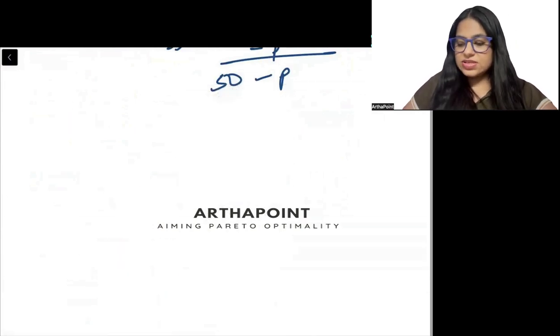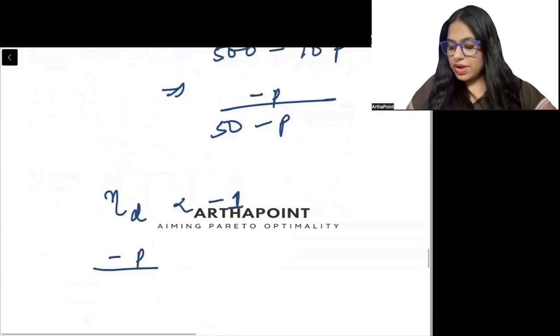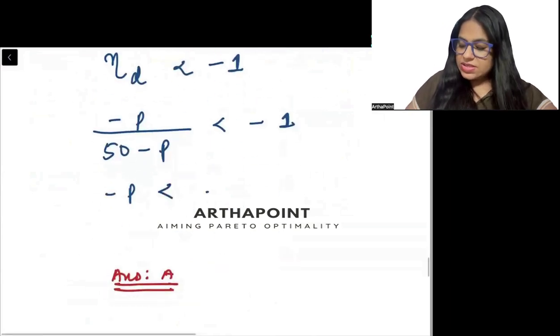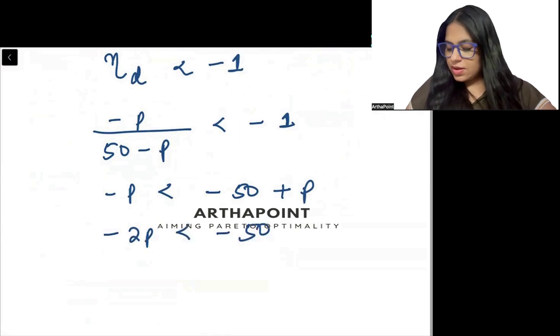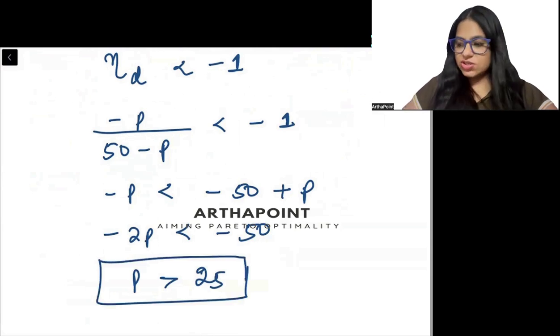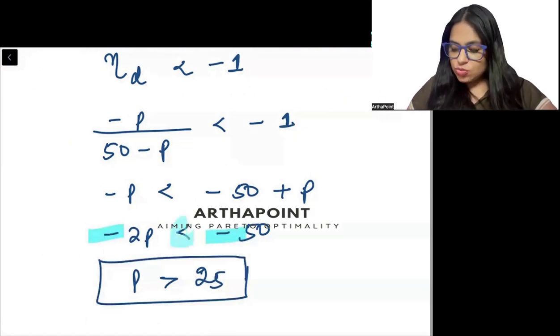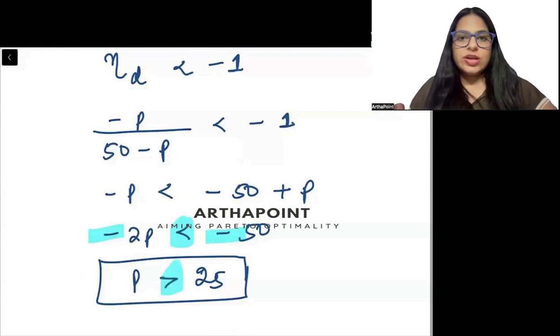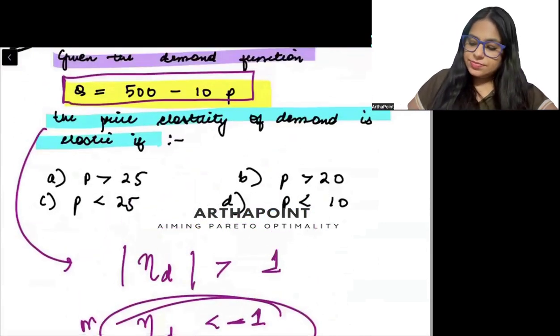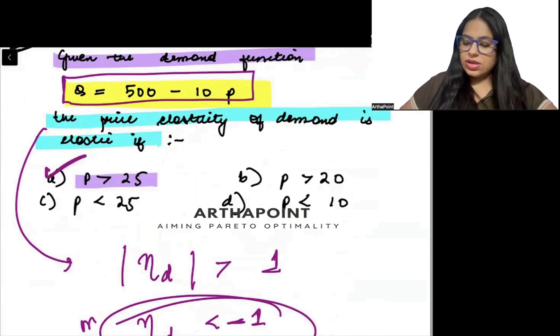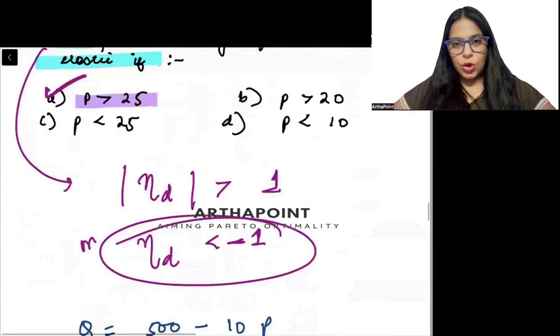Now when is it elastic beta? What is the definition of elastic? When elasticity of demand is less than minus 1. So minus P upon 50 minus P less than minus 1. Minus P less than minus 50 plus P. Minus 2P less than minus 50. Divide, P greater than 25. Whenever you change the sign, if I have to convert this to positive, the sign reverts. So if my price is greater than 25, my elasticity will be elastic. So answer will be A.